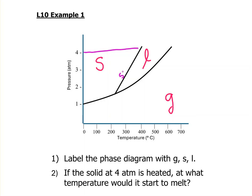This is the line where solid and liquid are at equilibrium, so when we get to that point, that's where it starts to melt, and it's about 400.